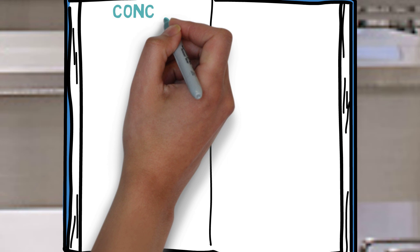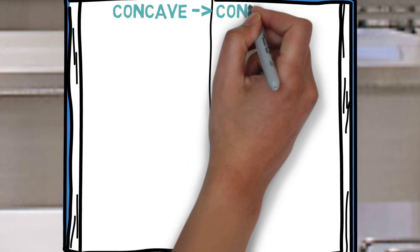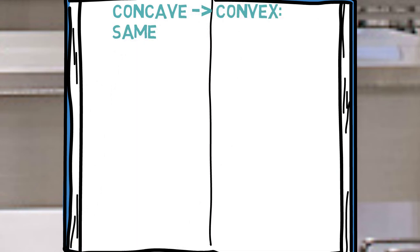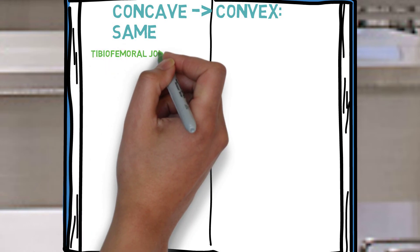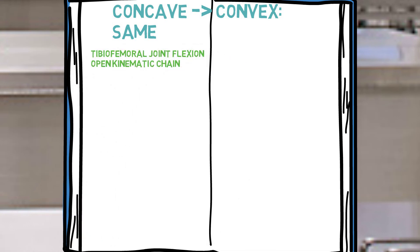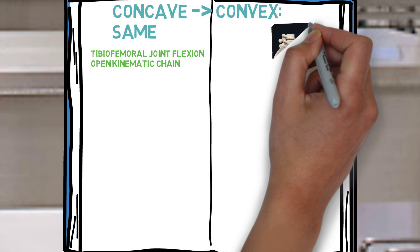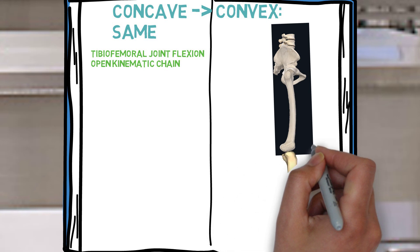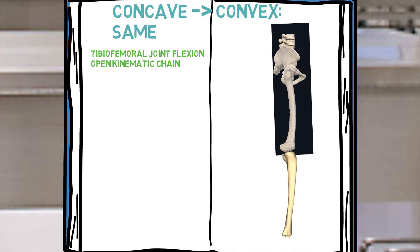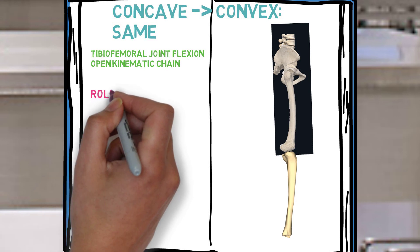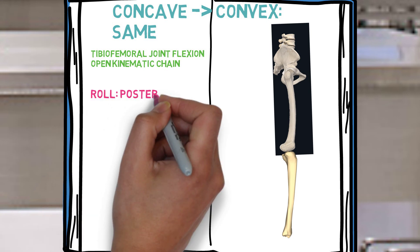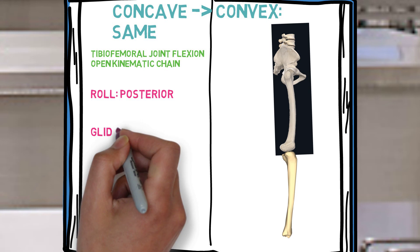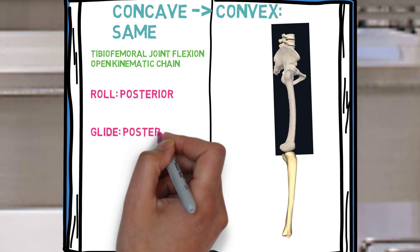This is an example of a concave articular surface moving on a convex surface. Remember that the roll and the glide will occur in the same direction. A classic example would be tibiofemoral joint open kinematic chain flexion, or in layman's terms, where the tibia moves on top of the femur. The proximal tibia is concave and the distal femur is convex, so the roll and the glide will occur in the same direction. The tibia will be rolling posterior and gliding posterior as well.